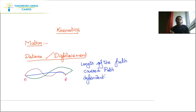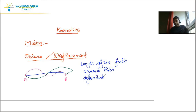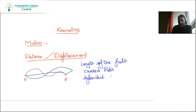For example, if you walk from your home to school, there can be multiple different paths. Your aim is to go from home to school and come back, but how much path you cover depends on which route you take. There can be multiple paths, so distance is path dependent.